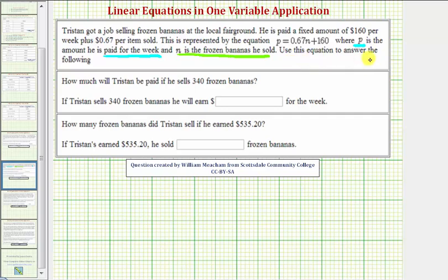We want to use this equation to answer the following questions. First, how much will Tristan be paid if he sells 340 bananas? Notice we're given the number of bananas sold, 340, which should be N in our equation. To answer this question, we'll substitute 340 for N and find the value of P.